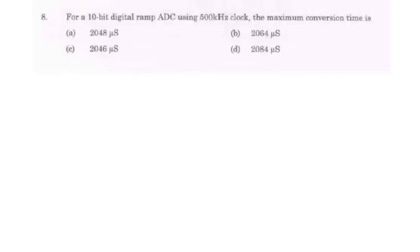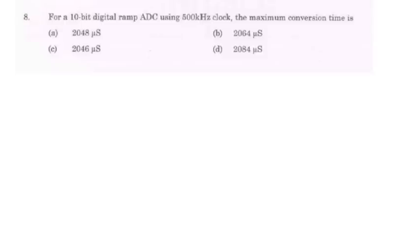In question number 8 we have to calculate maximum conversion time for a 10 bit digital ramp type analog to digital converter using a 500 kHz clock. A ramp type ADC checks all the values from 0 to the value of analog input. So maximum conversion time will occur when the input is maximum.